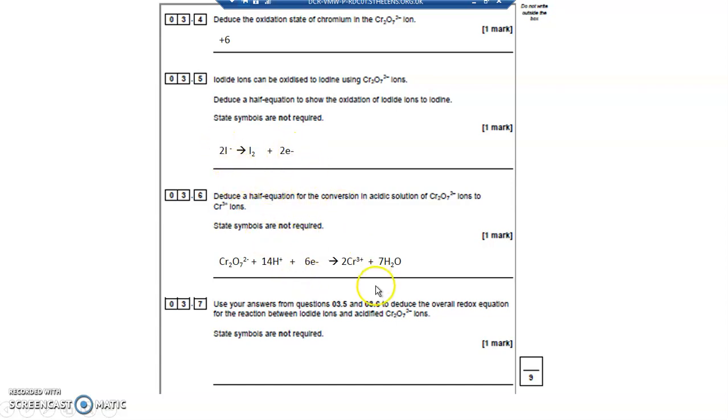Then I take everything from the left and everything from the right. So I've got 6I-, because I've multiplied this through by three. So I've got 3I2, 6 electrons, 2Cr3+ pluses, and 7 waters. And now you can see why I've multiplied this through by three, to get 6 electrons on the right-hand side. My electrons cancel, and so once my electrons cancel, I end up with a simplified equation like this.